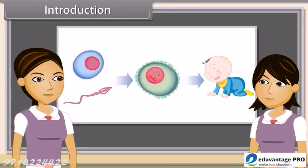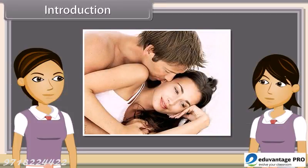As we have already discussed, reproduction is the ability of all organisms to produce young ones similar to themselves in most characters. For the process of reproduction, we have to make sexual contact. But if we do this without any protection, then many diseases are spread from an infected partner.